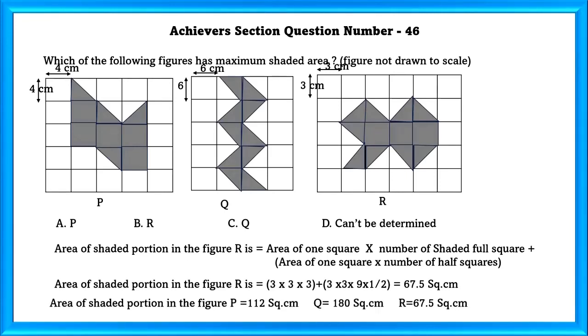Area of shaded portion in figure P is equal to 112 square centimeters, Q is equal to 180 square centimeters, and R is equal to 67.5 square centimeters. So, the maximum shaded area is in Q. So our answer is C, Q.